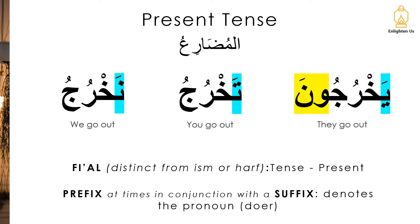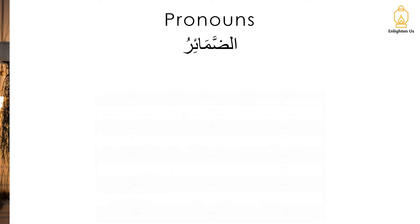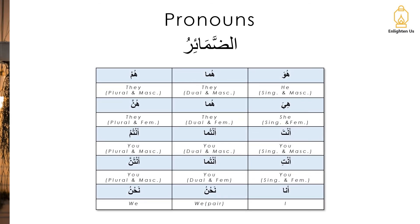Now, before we go and have a look at the chart for all the various doers and all the various pronouns, let's remind ourselves of the pronouns: هو، هما، هم، هيَ، هما، هنَّ، أنتَ، أنتما، أنتم، أنتِ، أنتما، أنتنَّ، أنا، نحن. And of course, I'm sure you've memorized the pronouns by now. Now, let's have a look at our chart for the present tense.